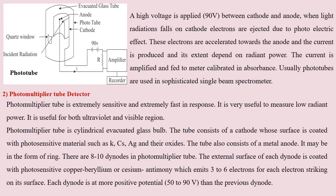When a high voltage — generally 90 volts — is applied between the cathode and anode, light radiation falls on the cathode. Due to the photoelectric effect, electrons are emitted. These electrons are then accelerated towards the anode and a current is produced. The extent of current produced depends on the radiant power. This current is then amplified and recorded by the readout device.